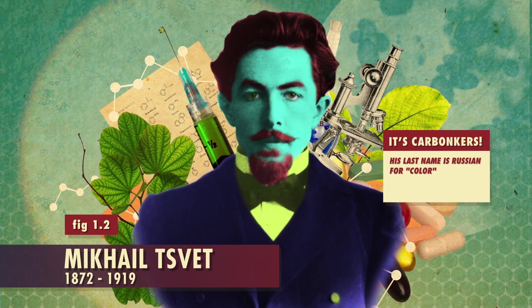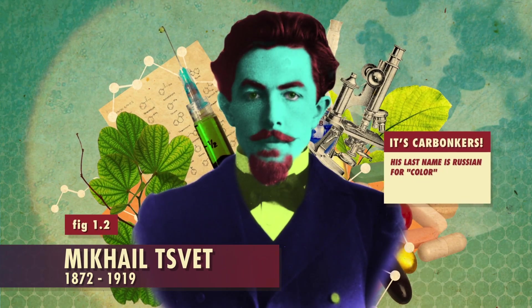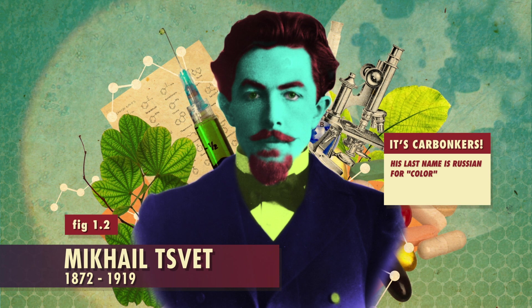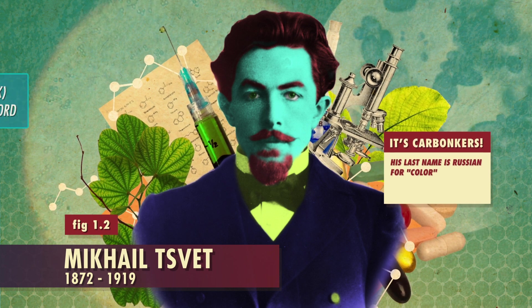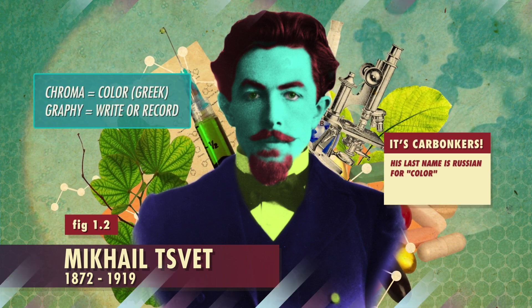The inventor of chromatography, Russian-Italian botanist Mikhail Tswett, first used solid calcium carbonate as a stationary phase to separate a sample of colored plant pigments. That's how chromatography got its name.